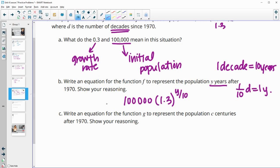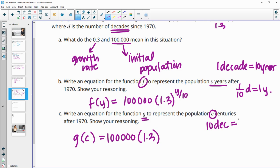And we should call this F, so F of Y equals this. Write an equation for the function G to represent the population in C, which is going to be centuries. G of C equals 100,000 times that growth factor of 1.3. Now we have to think about how many decades is a century. 10 decades equals 1 century, so this number up here is going to be 10C.